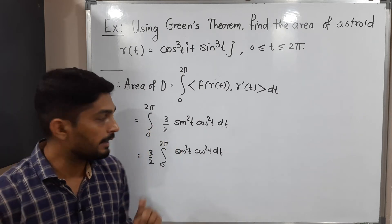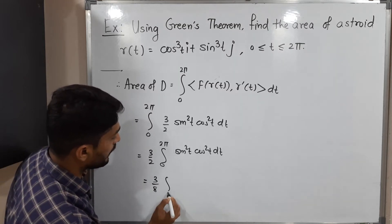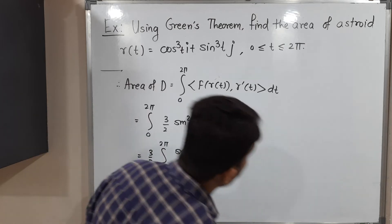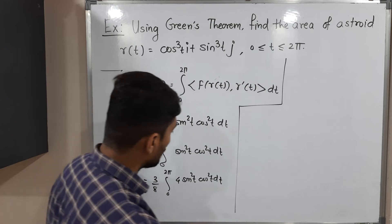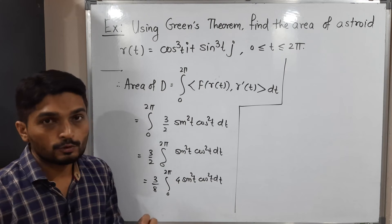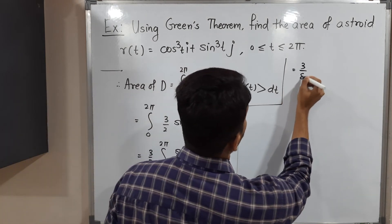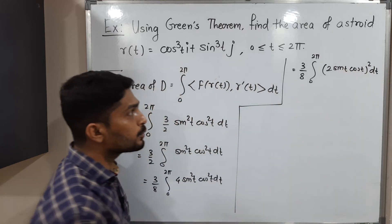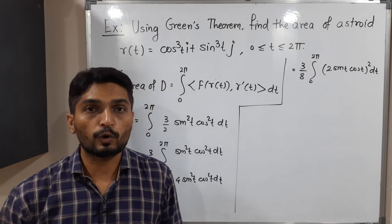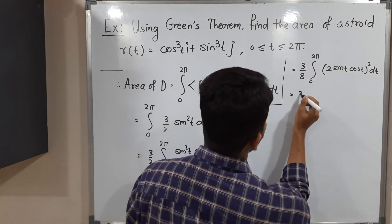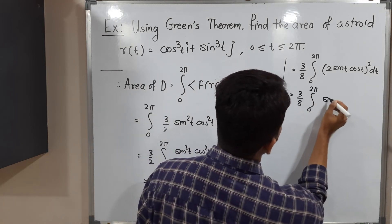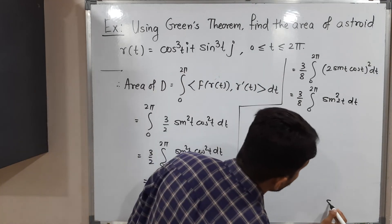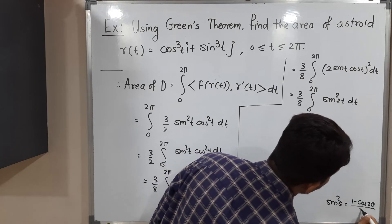We cannot solve this integration directly; we use trigonometric identities. Multiply and divide by 4: the constant becomes 3/8 and we have ∫₀²π 4sin²t·cos²t dt. Since 4sin²t·cos²t = (2sin t·cos t)², this equals sin²(2t). So the integral becomes (3/8)∫₀²π sin²(2t) dt.